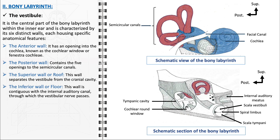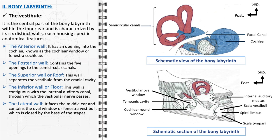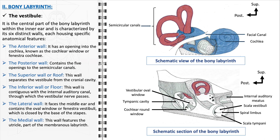The inferior wall, or floor, of the vestibule is contiguous with the internal auditory canal, a vital pathway through which the vestibular nerve passes, carrying sensory information to the brain. The lateral wall faces the middle ear and contains the oval window, or fenestra vestibule, which is closed by the base of the stapes and is key in transmitting sound vibrations from the middle ear into the inner ear. Finally, the medial wall features the utricle, part of the membranous labyrinth, which along with the saccule contains sensory receptors that contribute to the sense of balance and spatial orientation.